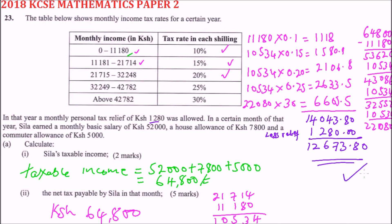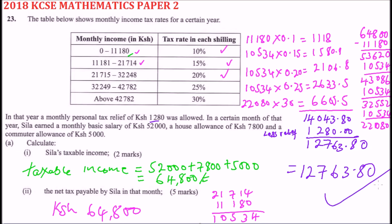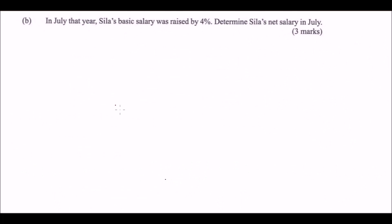When you subtract using your calculator, you should get twelve thousand seven hundred and sixty-three point eight zero. So the net tax payable is 12,763.80 Kenyan shillings. That is how you do that part of the question.